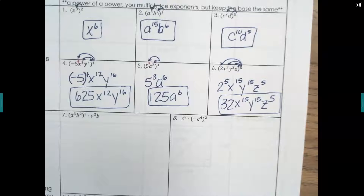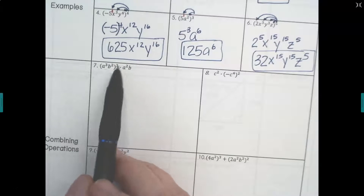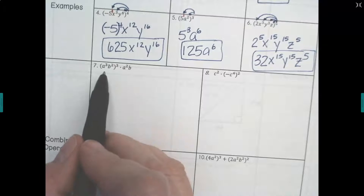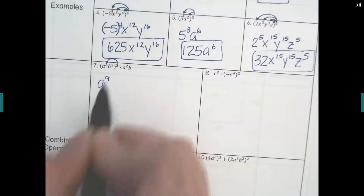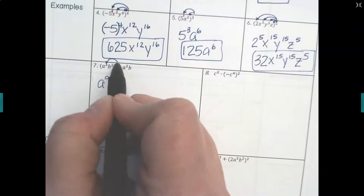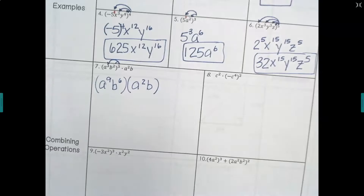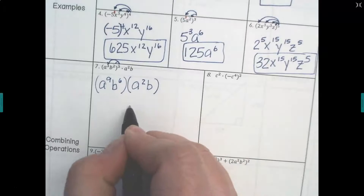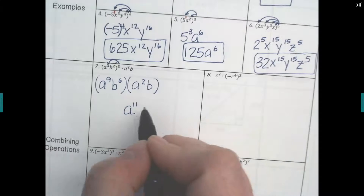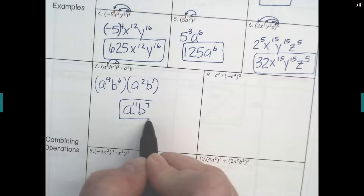Now we're going to start combining this with what we've been doing previously. In number seven, I've got multiplication between two terms, but I want to simplify down before multiplying. So I send power three through: a to the third times three is a to the ninth, and b to the two times three is b to the sixth. This multiplies to a squared times b. When multiplying, we add exponents: a to the ninth times a squared — nine plus two is 11. For b: six plus one is seven. So the answer is a to the 11th, b to the seventh.